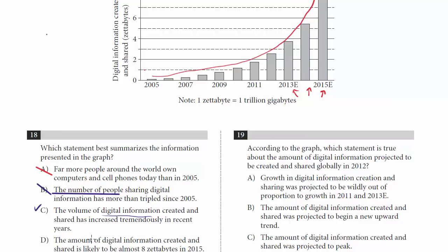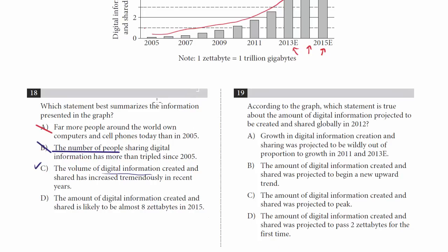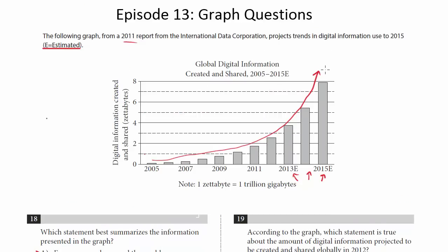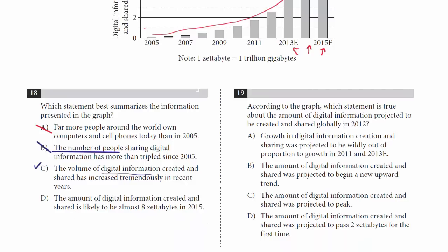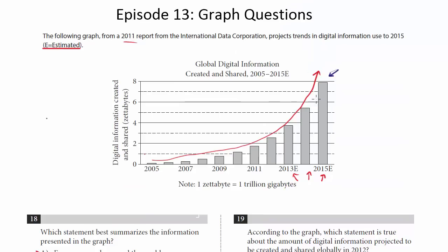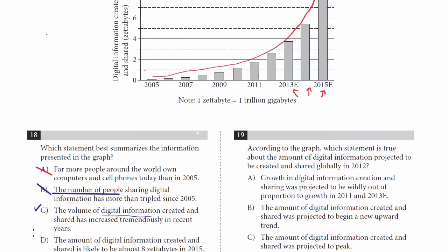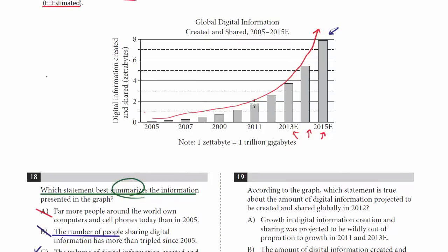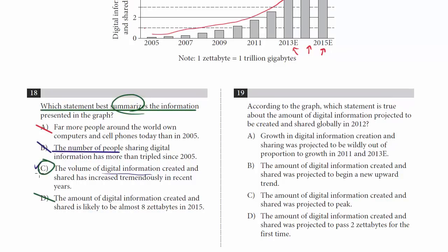Choice D: the amount of digital information created and shared is likely to be almost eight zettabytes in 2015. Well, 2015 is the last bar here and it is pretty close to eight, so that seems true — that's what the chart shows. So how do I choose between C and D? Go back to the question: which statement best summarizes the information? Does D summarize the information? No — it gives us a single data point but doesn't give us the big picture. Whereas C does: it tells us that over time this data has increased tremendously. So the answer is C.